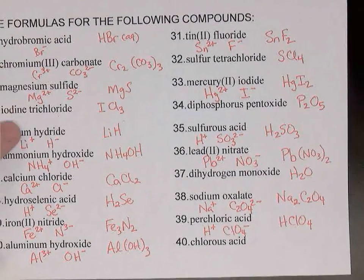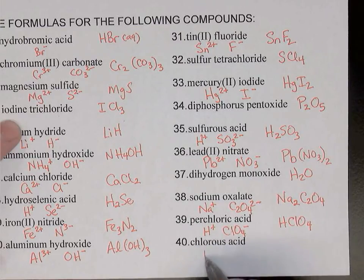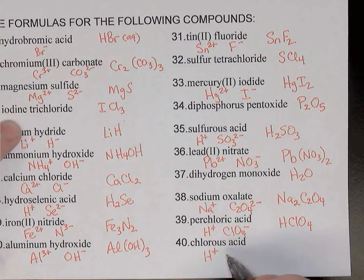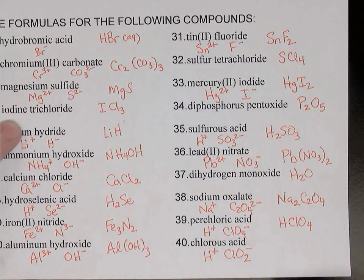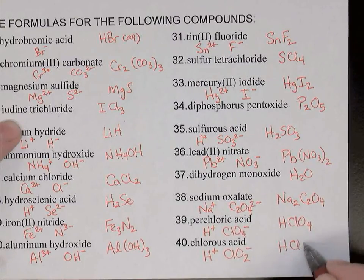And finally, chlorous acid: again there's no hydro, so this is not a binary acid — hydrogen with a complex ion. Chlorous means the ion was chlorite, ClO2-. So plus one, minus one: HClO2.